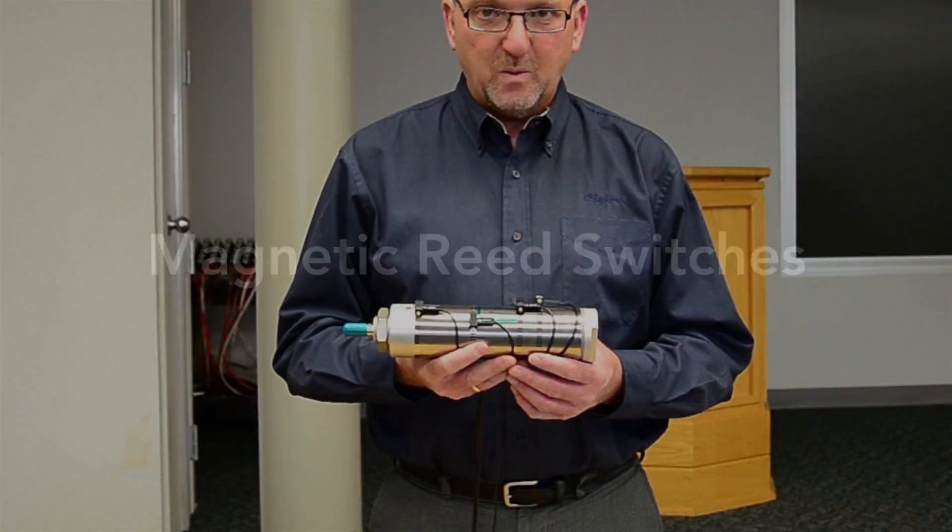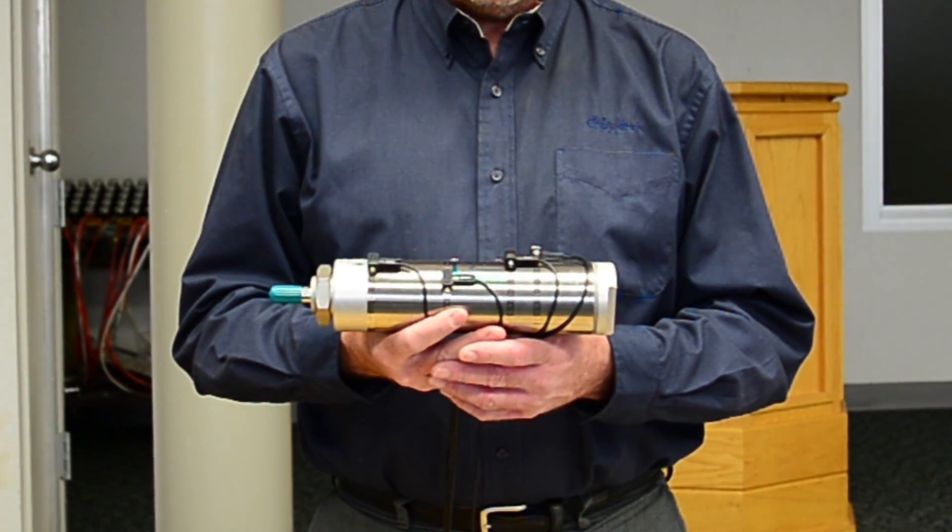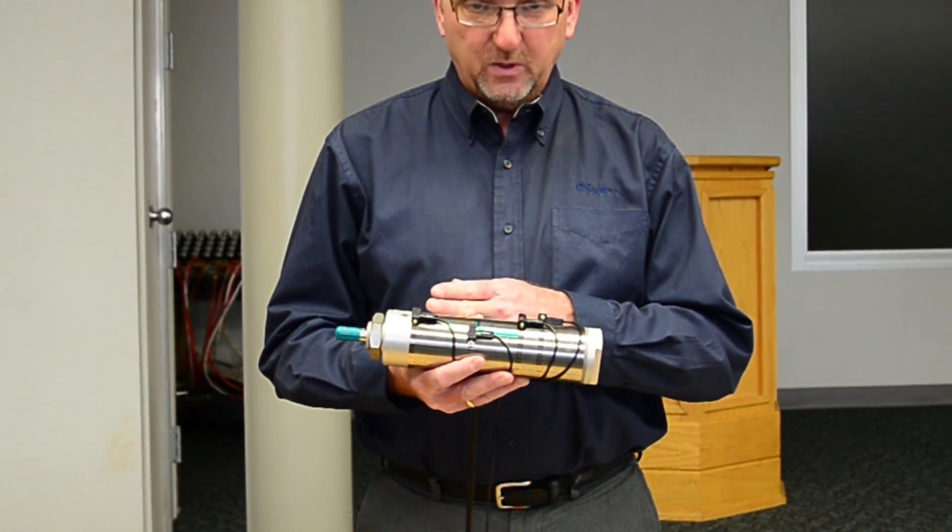A cylinder equipped with an internal magnet can utilize these reed switches to help detect location. It can detect single locations or multiple locations.